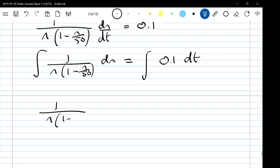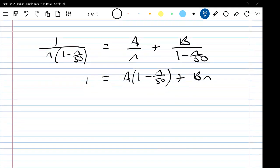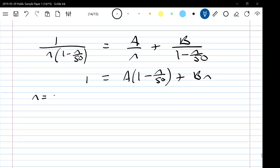1 over n times 1 minus n over 50 is A over n plus B over 1 minus n over 50. Rearrange that to get 1 equals A times 1 minus n over 50 plus Bn. We need to choose some strategic values of n. Zero leaps out at us so that gives us 1 equals A, and if n is 50 we've got 1 is 0A plus 50B so B is 1/50.